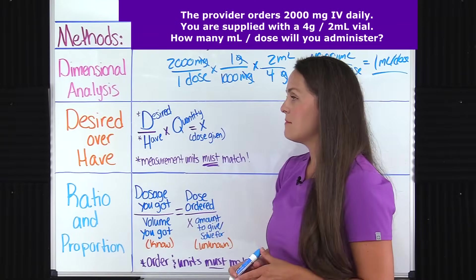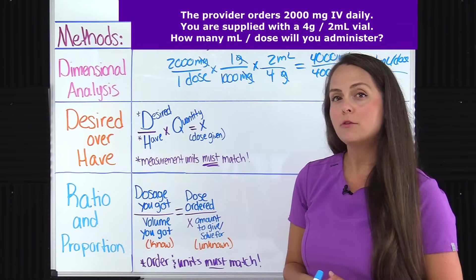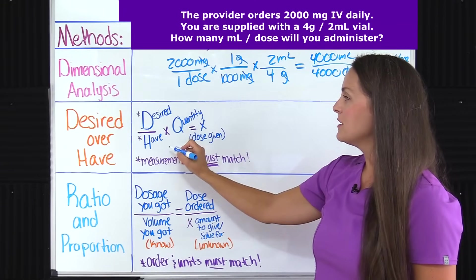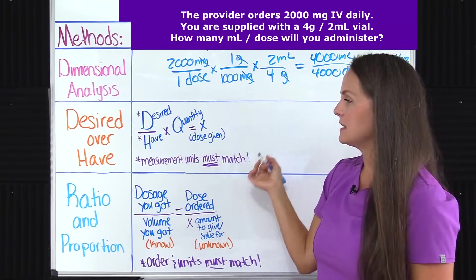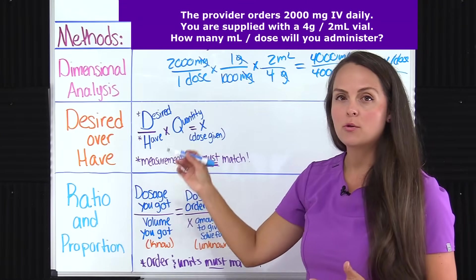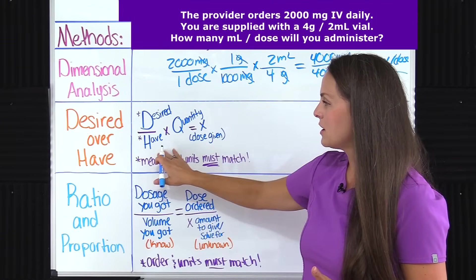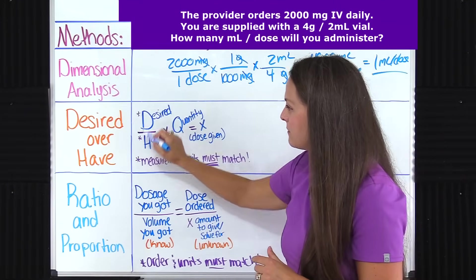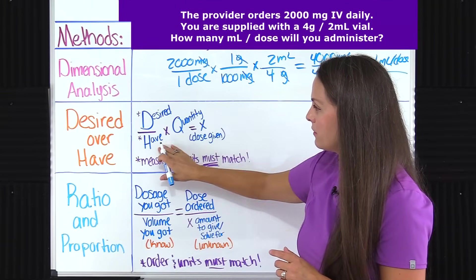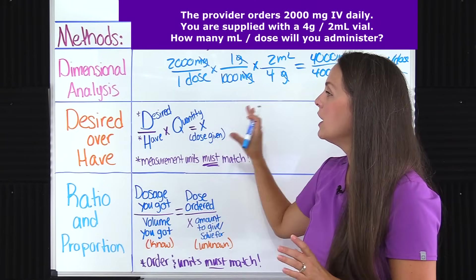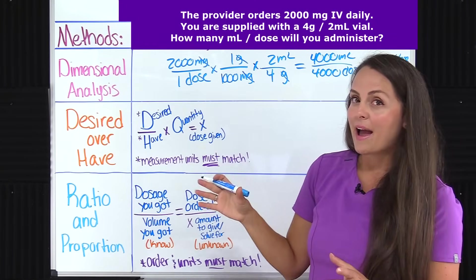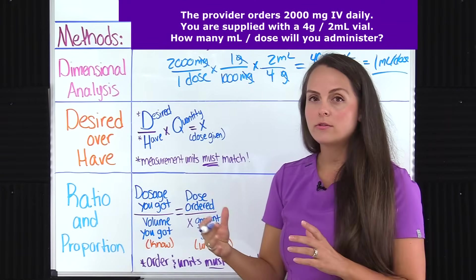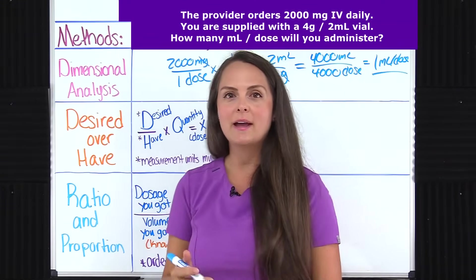Now let's solve this problem using the desired over have method. This is a formula method, so you're going to have to memorize a formula. What this formula says is that you take the desired dose over the have dose and multiply that by the quantity — and that gives you X, the dose that needs to be given. The desired dose is the dose ordered by the provider; the have dose is what you've been supplied with from pharmacy. These units must match before you proceed with solving. If they don't match, do a little converting, then re-plug into your formula and multiply by the quantity to get your answer.